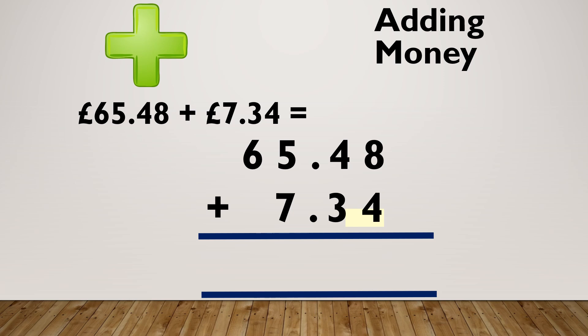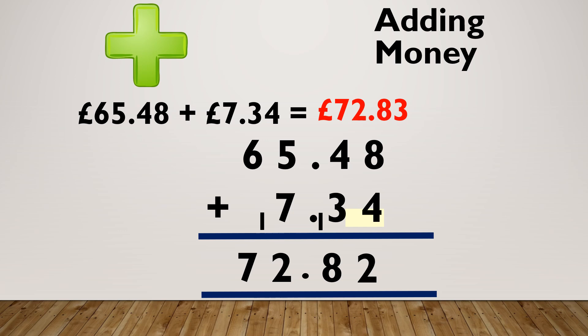Then again I'm going to start right to left. 8 plus 4 is 12, so I'm going to put my 2 down and carry my 1. Whether you put your 1 up top or down below, just don't forget about it. 4 plus 3 plus 1 is 8, decimal point, 5 plus 7 is 12 — 2 down, carry my 1 — and 6 plus 1 is 7. So my final answer is £72.83.